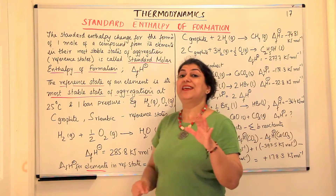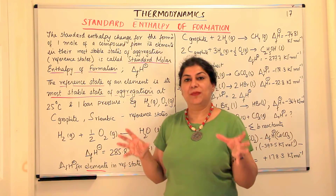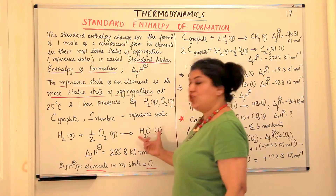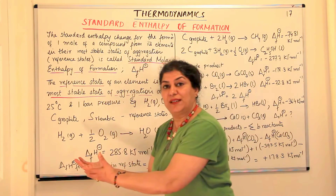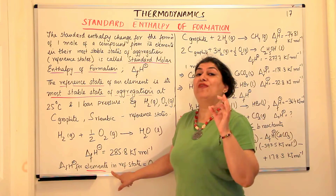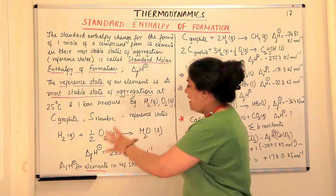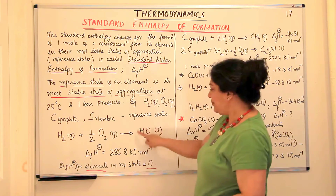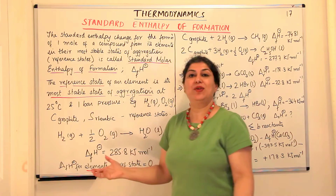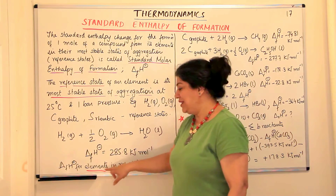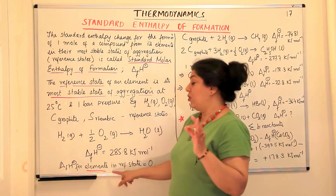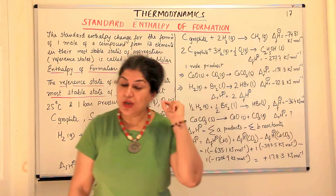Usually, for elements in their reference states, the enthalpy of formation is zero. So when you are finding out the enthalpy of this change, you know the enthalpy for H₂O is −285.8 kJ/mol, minus the enthalpies of H₂ and O₂, and both of those would be zero because they are elements. When you carry out numerical problems, you have to keep in mind that the standard enthalpies of elements in their reference states are always taken to be equal to zero if they are pure.